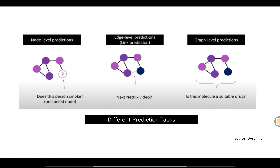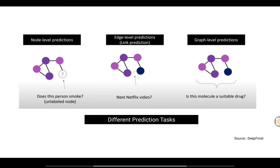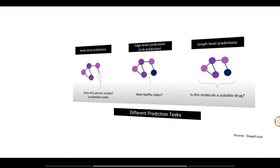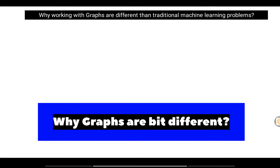There is also graph-level prediction, where you make a prediction on the full graph. One example is determining whether a molecule is a suitable drug — used in drug discovery. We get a molecule with a graph structure and predict whether it is a suitable drug for a particular disease.